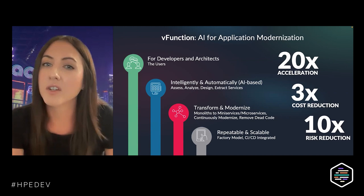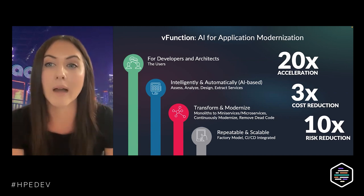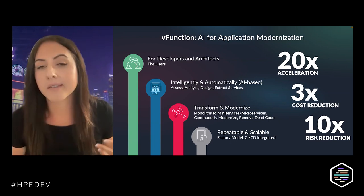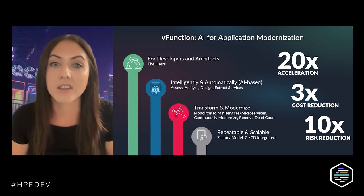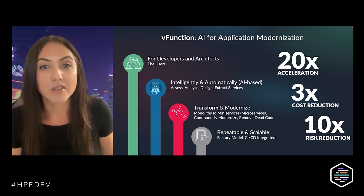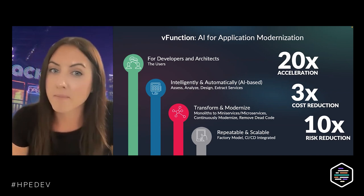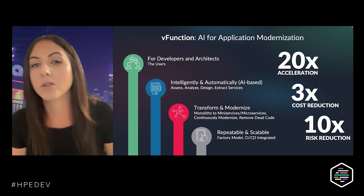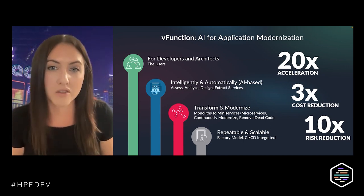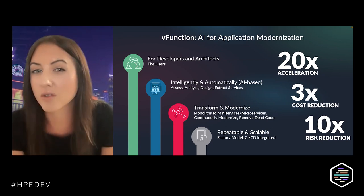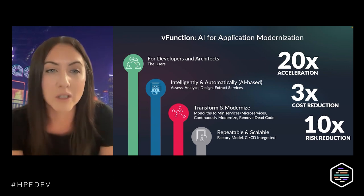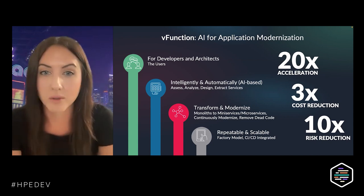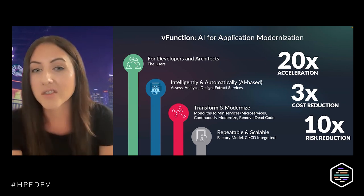vFunction developed this platform to fill a major gap in the market and help developers and architects overcome massive pain points like engineering velocity, application scalability, technical debt, and skills gaps. So what is vFunction? We're an AI application modernization platform. Our platform allows you to take Java apps, assess them, analyze them, design them, remove dead code, and ultimately break them into microservices or mini services — all on a single platform with a single user experience. This lets you build a repeatable factory model and accelerate innovation using technologies like HPE Ezmeral, GreenLake, or serverless technology.